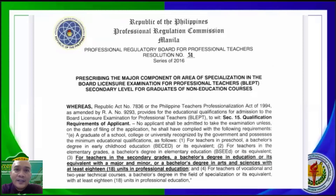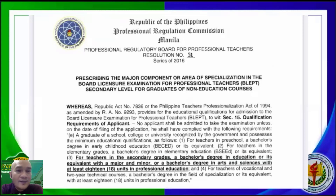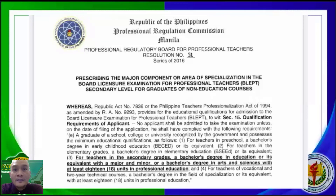For example, some of you here are BS Psychology, BS Civil Engineering, and most of you are graduates of Commerce, Marketing, or Financial Management, or Nursing. You will find your designated area of specialization or majorship in this list.